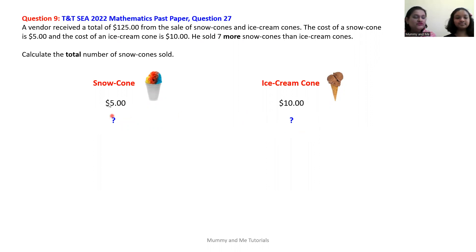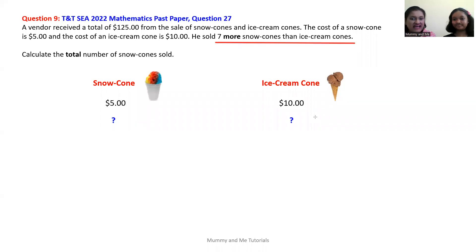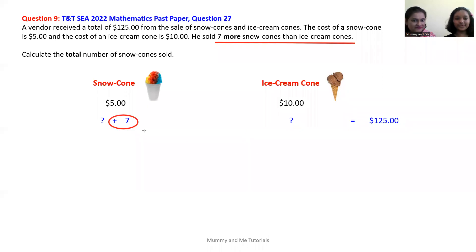For example, if he sold three snow cones, he sold three ice cream cones. Another example: if he sold 10 snow cones, he sold 10 ice cream cones — the numbers are equal. However, because he sold seven more snow cones than ice cream cones, that means he sold an unknown amount of ice cream cones, but the same unknown amount of snow cones plus an additional seven snow cones.